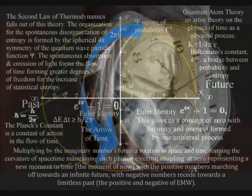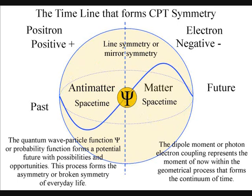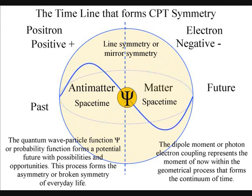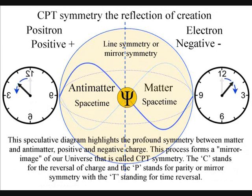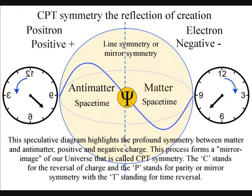In this diagram, we have the complex plane with zero in the center representing t equals zero. We can think of this as one photon-electron coupling or dipole moment equals zero, the moment of now, with the positive numbers representing an infinite future and the negative numbers representing an infinite past. There is symmetry between the positive and negative numbers representing the symmetry between the future and the past as the future unfolds with each photon-electron coupling or dipole moment. This forms CPT symmetry with symmetry between charge, parity, and time. We have symmetry between matter and antimatter, and because the absorption and emission of light or photon energy is spontaneous, there will always be the continuous annihilation of antimatter.